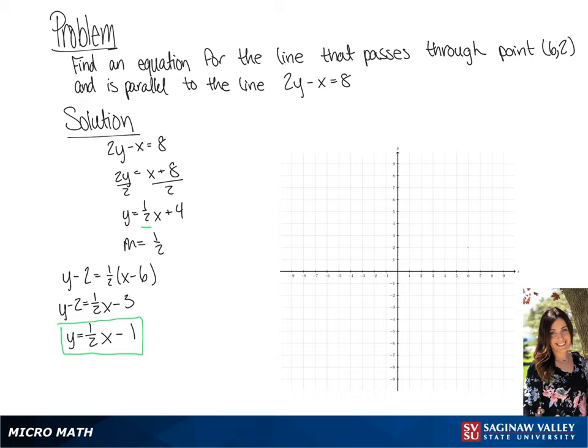Now we're going to plot this using the point as well as the y-intercept. So we plot our point (6, 2), and our y-intercept equals negative 1, so (0, negative 1). And we're going to plot that. And if we connect these two points, we will have our line.